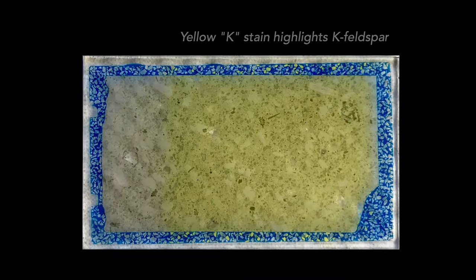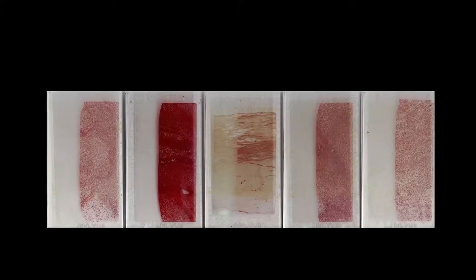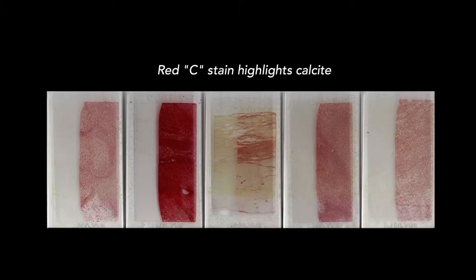The application of mineral stains is a quick and direct method for identifying minerals in thin section. Staining highlights target minerals that may be petrographically diagnostic in classifying a rock or understanding its history. This information can also serve as a prerequisite for more advanced quantitative microanalysis performed on polished thin sections.